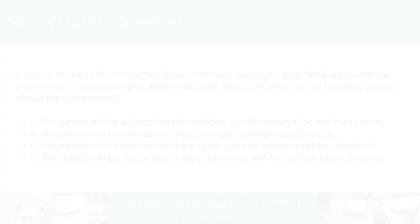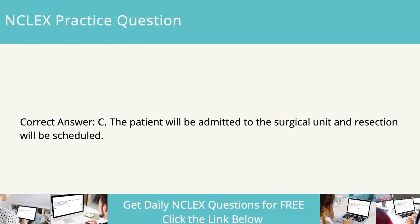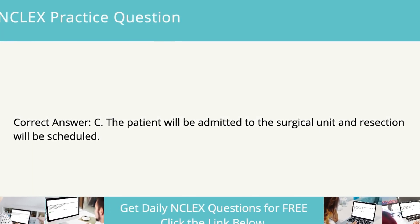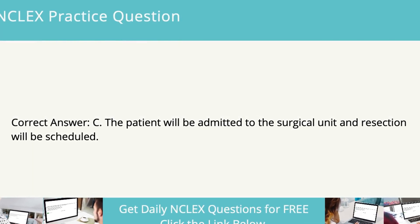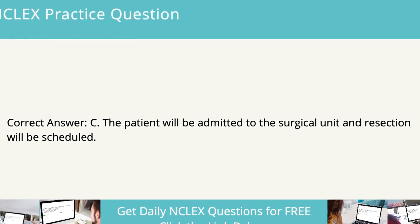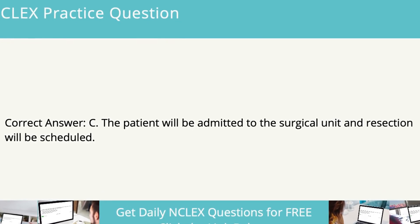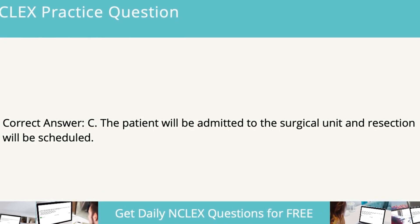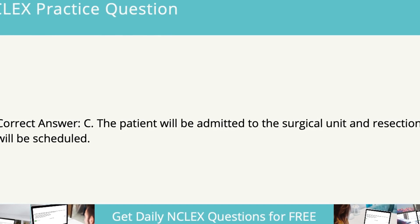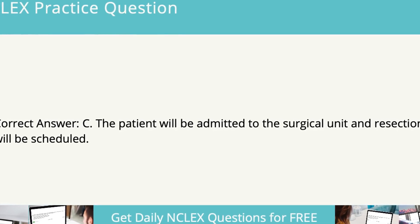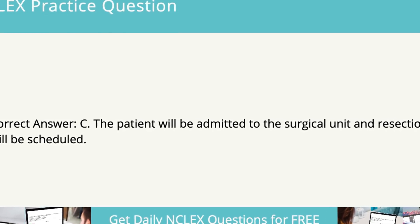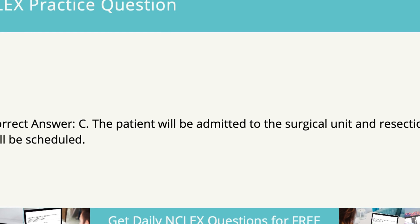The correct answer is the patient will be admitted to the surgical unit and resection will be scheduled. A rapidly enlarging abdominal aortic aneurysm is at significant risk of rupture and should be resected as soon as possible. No other appropriate treatment options currently exist.